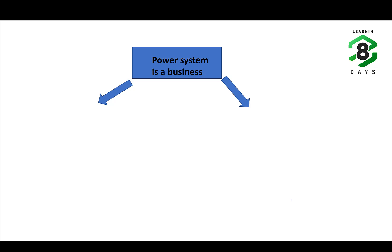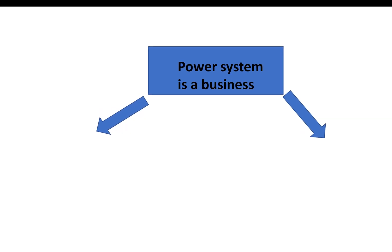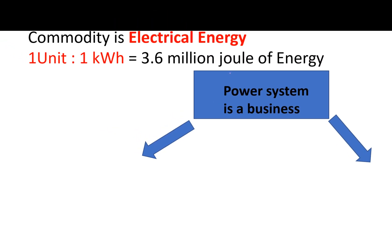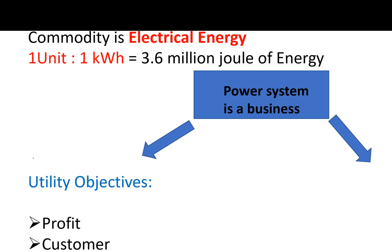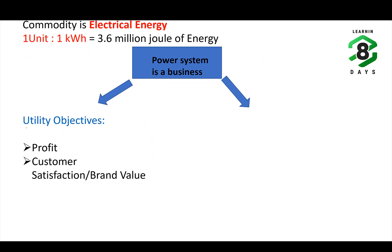If you understand the power system as a business, the commodity being sold is electrical energy. The unit of electrical energy is one kilowatt-hour, which is equal to 3.6 million joules of energy. In this business, the utility is the one who supplies electrical energy to the customers. The objectives of the utility, like any business, are profit and customer satisfaction.